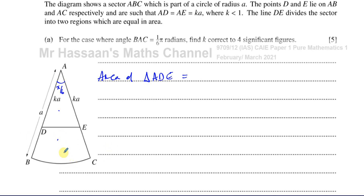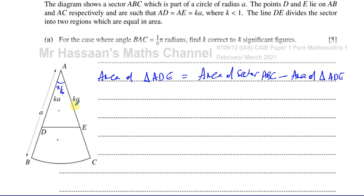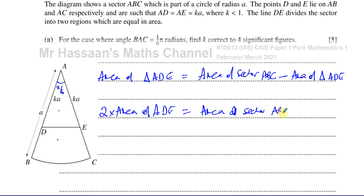The area of BDEC is the area of sector ABC minus the area of triangle ADE. So: area(ADE) = area(sector ABC) − area(ADE). Adding area(ADE) to both sides gives us two times the area of triangle ADE equals the area of sector ABC. So two of these triangles have the same total area as the whole sector.